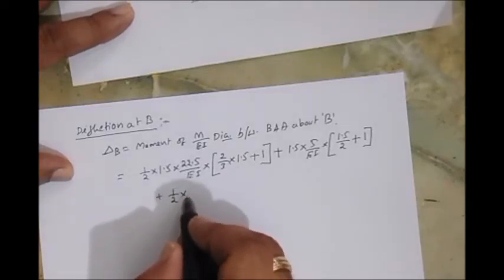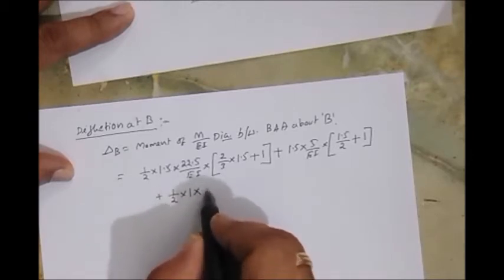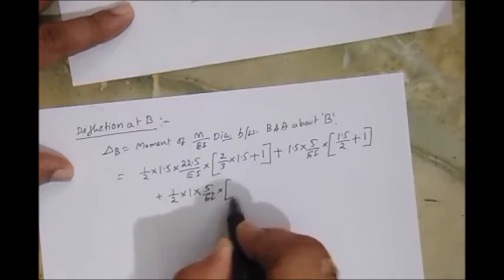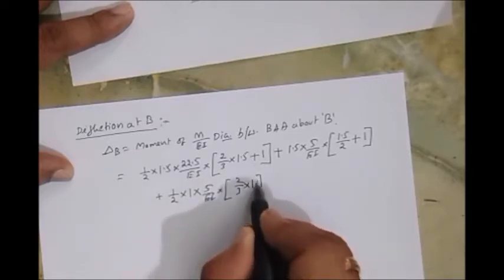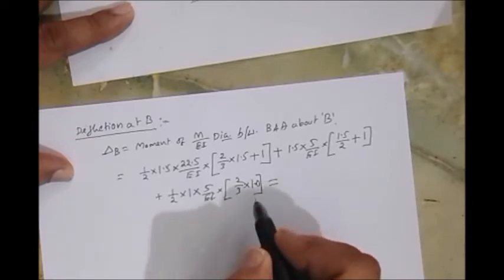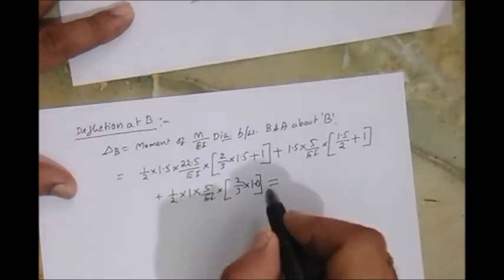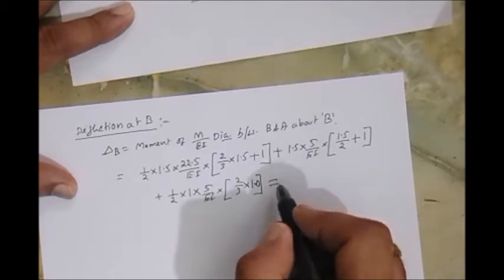Plus 1 meter. Then let's consider the last region. Then it is plus, it's a triangle, so half into, this is 1, height is 5 by EI. CG lies 2/3 of 1.